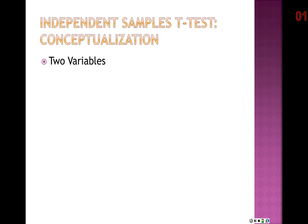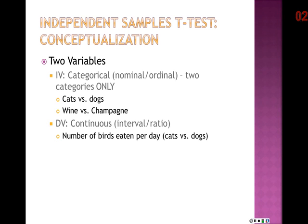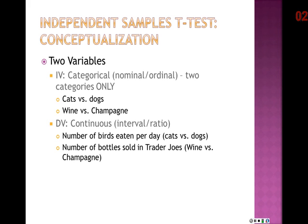With the independent samples t-test we use two variables. The independent variable is a categorical variable—either nominal or ordinal—and it can only have two categories, such as upperclassmen versus lowerclassmen, or wine versus champagne. The dependent variable is a continuous variable, either interval or ratio type. For example, we might measure the number of birds eaten per day or the number of bottles of wine or champagne sold, and compare the averages to see if there's a significant difference.